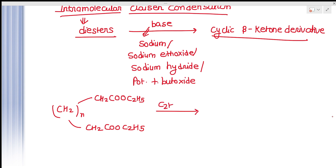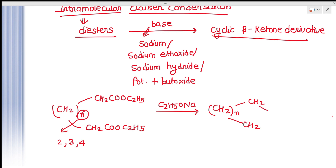It is treated in the presence of C₂H₅ONa, where n may be 2, 3, or 4. It is then converted to (CH₂)ₙ-CH₂-C=O, forming a cyclic beta-ketone derivative. This reaction proceeds best when the dibasic acids have 6, 7, or 8 atoms, because in these cases 5-, 6-, or 7-membered stabilized rings are formed.